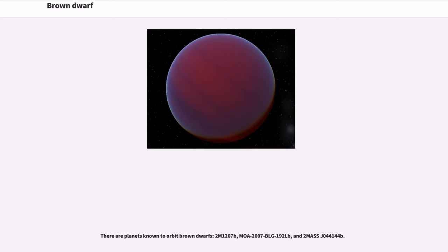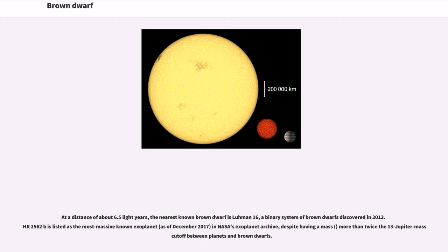There are planets known to orbit brown dwarfs: 2M1207b, MOA-2007-BLG-192Lb, and 2MASS J04414489. At a distance of about 6.5 light years, the nearest known brown dwarf is Luhman 16, a binary system of brown dwarfs discovered in 2013. HR 2562b is listed as the most massive known exoplanet despite having a mass more than twice the 13 Jupiter mass cutoff between planets and brown dwarfs.